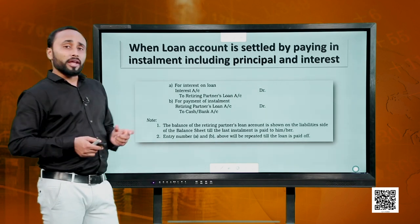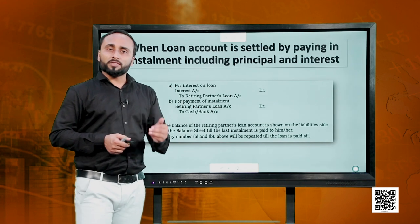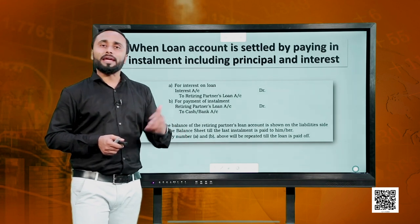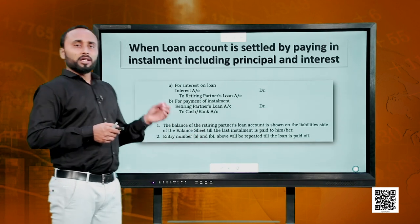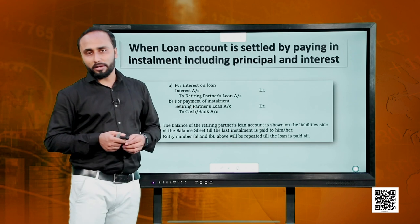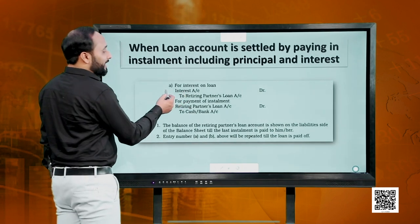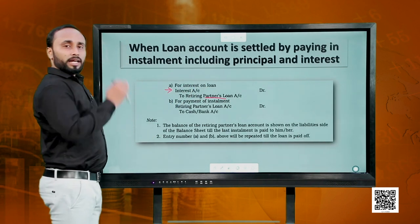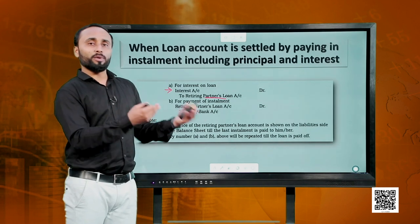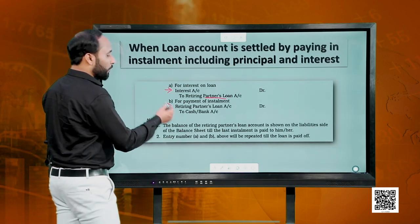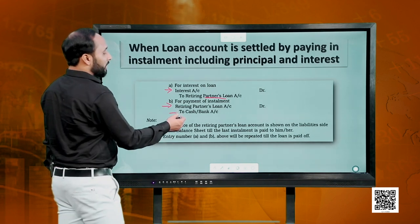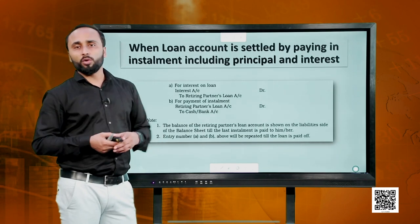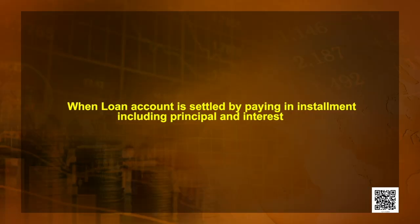Sometimes when we transfer the retiring partner's amount to his loan account, the firm may also decide to pay interest on that loan. We debit the interest account — it is an expense — and credit the retiring partner's loan account, so the interest gets added to the amount of loan due. When we make the payment, we debit the loan account and credit the cash or bank account.